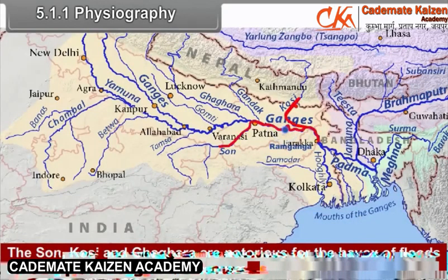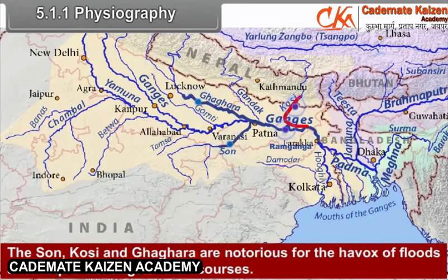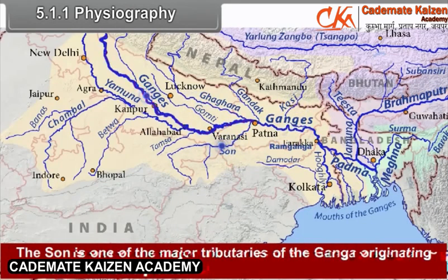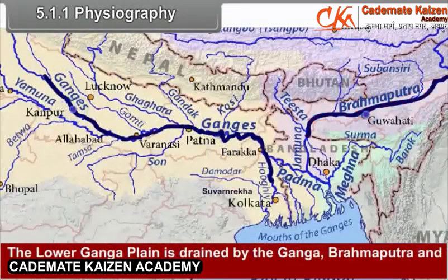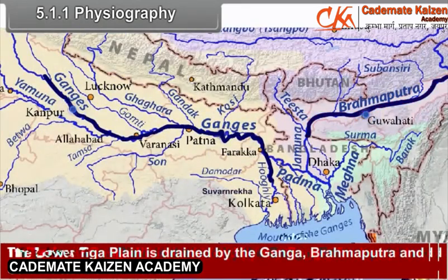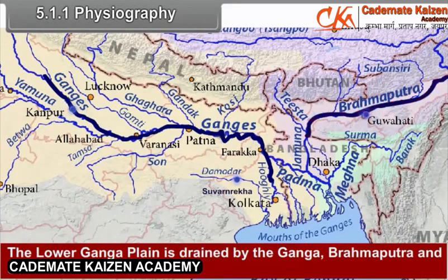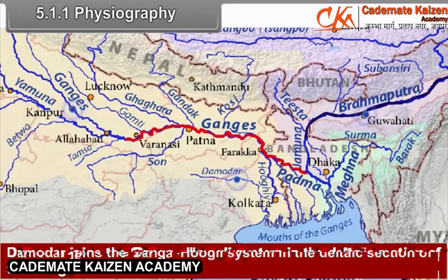The Son, Kosi and Ghagra are notorious for the havoc of floods and frequent changes in their courses. The Son is one of the major tributaries of the Ganga, originating from the Peninsular Plateau. The Lower Ganga Plain is drained by the Ganga, Brahmaputra and Subarnarekha rivers. The Damodar joins the Ganga-Hugli system in the delta section of the Ganga.